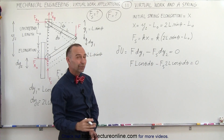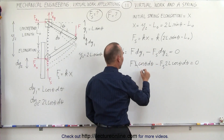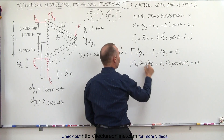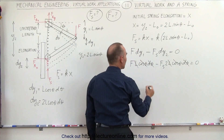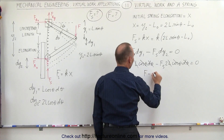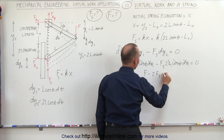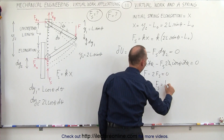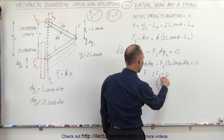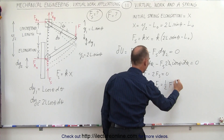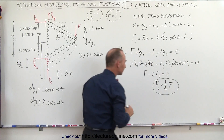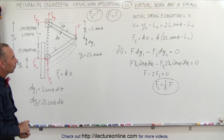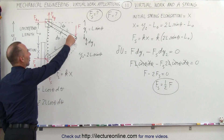Since the virtual work equals zero, we divide both sides by L, by d theta, and by cosine theta. This gives F minus 2 times Fs equals zero, so the spring force Fs equals one-half of the applied force F. The force on the spring is only half the force applied at the end.